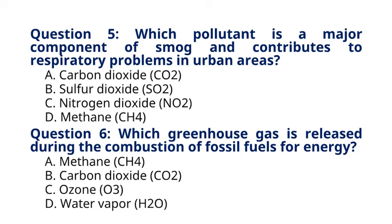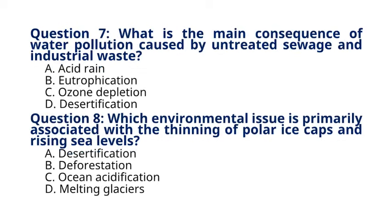Question 7. What is the main consequence of water pollution caused by untreated sewage and industrial waste? A. Acid rain. B. Eutrophication. C. Ozone depletion. D. Desertification. The correct answer to question 7 is option B. Eutrophication. Explanation: untreated sewage and industrial waste introduce excess nutrients like nitrogen and phosphorus into water bodies, leading to eutrophication, which causes algal blooms, oxygen depletion, and fish kills.